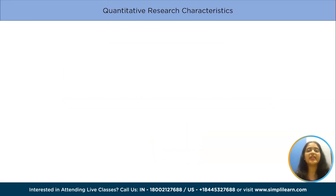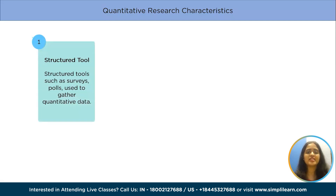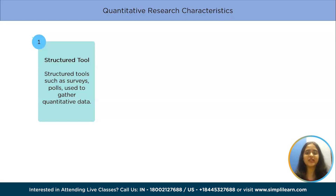Moving on to quantitative research characteristics. The first is structured tools. Structured tools such as surveys, polls or questionnaires are used to gather quantitative data. Using such structured methods helps in collecting in-depth and actionable data from the survey respondents.